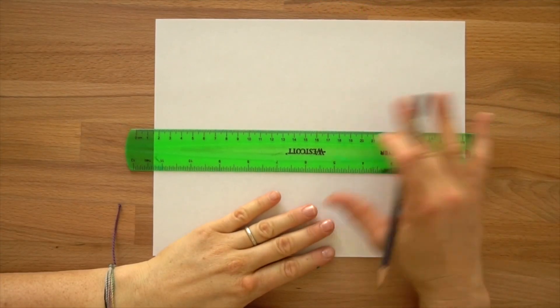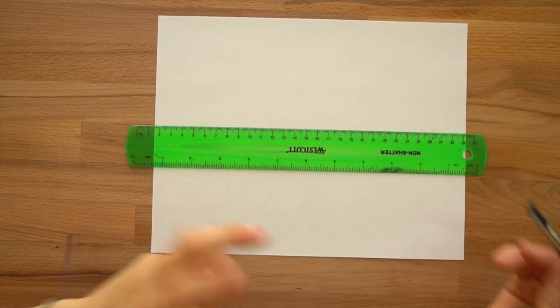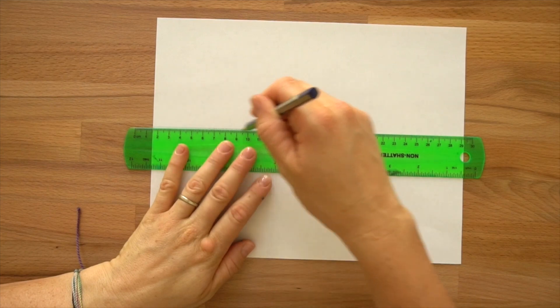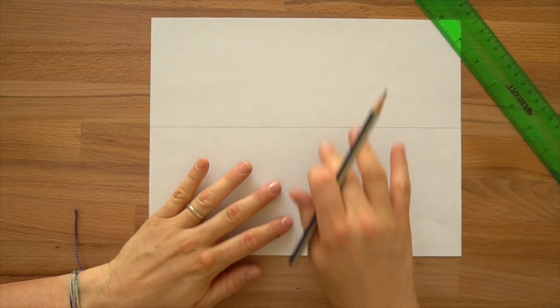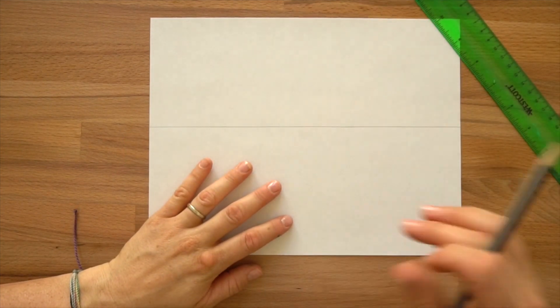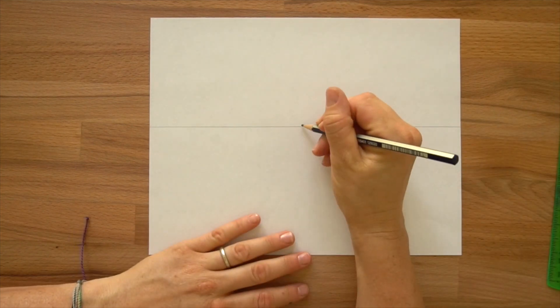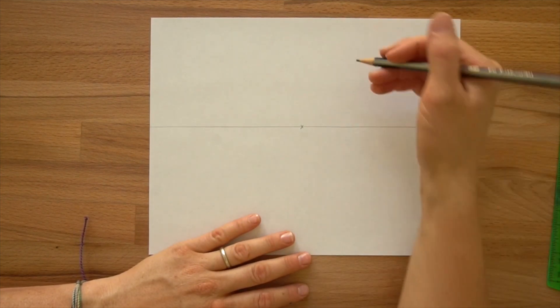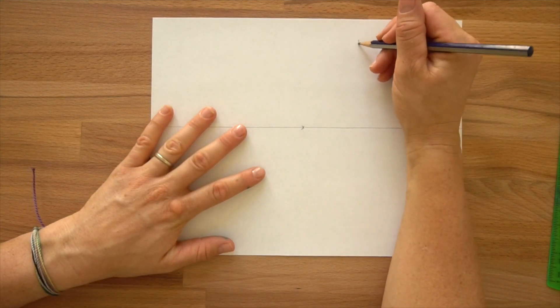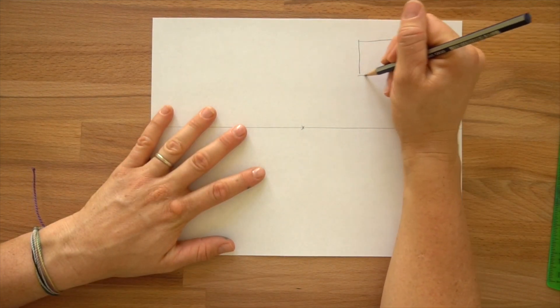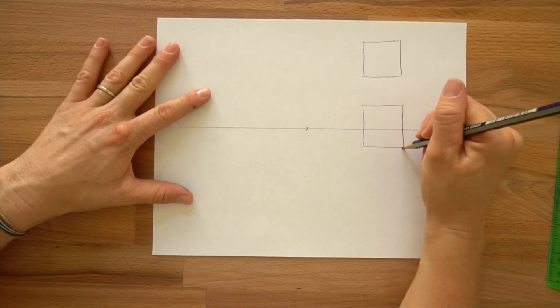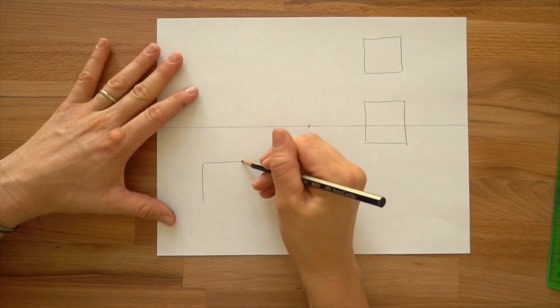Grab your ruler and your normal piece of paper and we're going to draw four boxes using one point perspective. Draw a line across the middle of your paper. This is the horizon line, where the sky meets the earth. Then we'll drop a vanishing point on there. This is where everything disappears. I want you to draw a square above the line.